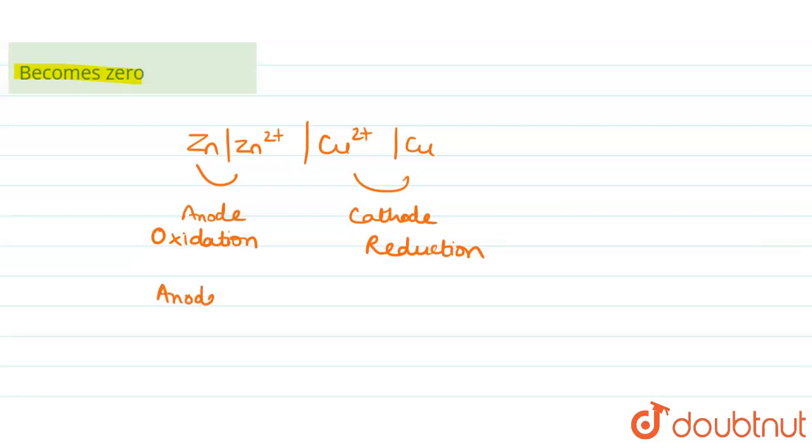First we write anode compartment: Zn converting into Zn2+ plus 2 electrons. At cathode compartment we write it as cathode Cu2+ plus 2 electrons gives Cu.